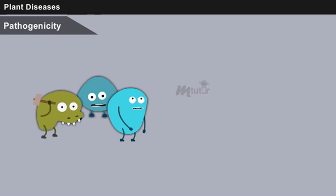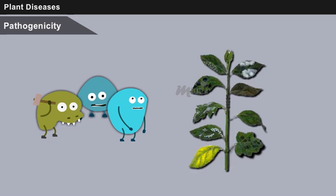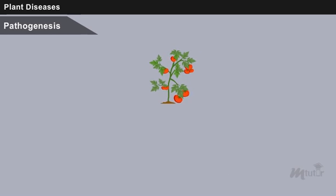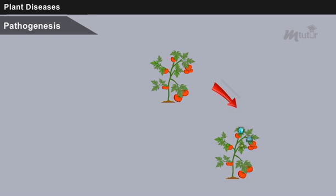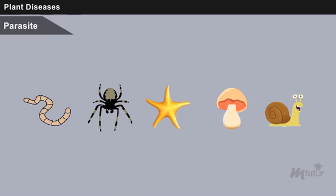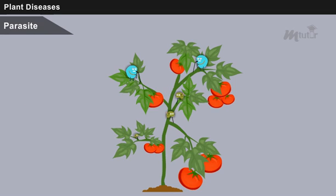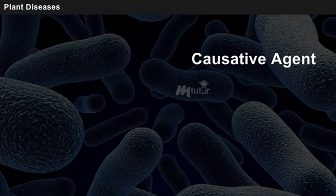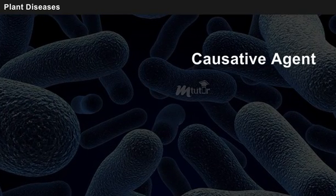Pathogenicity is the capability of a pathogen to cause disease. Pathogenesis refers to the chain or series of events involved in the development of disease in a host, ranging from the initial contact of the pathogen with the host until the appearance of symptoms. A parasite is an organism living on or inside another living organism — the host — for obtaining its food from that organism.